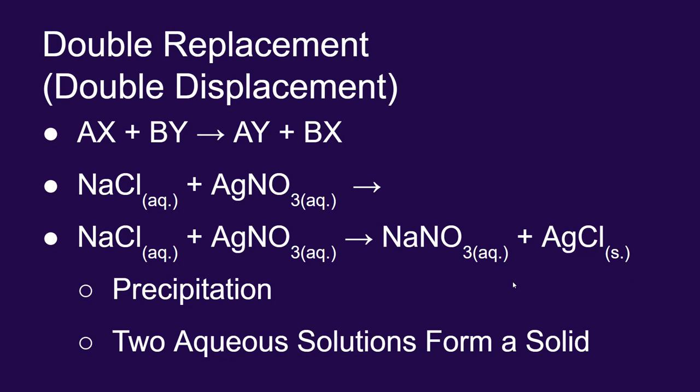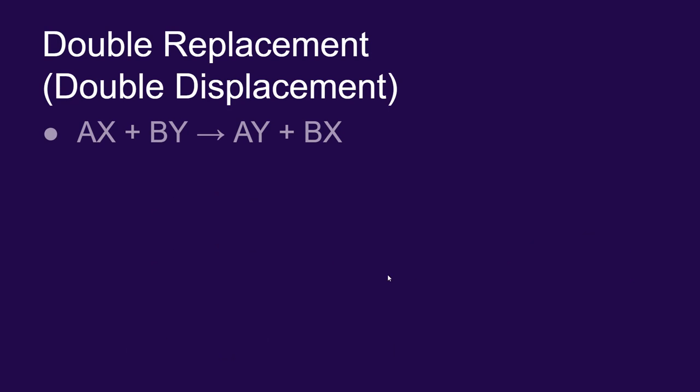Let's look at one more double replacement reaction. We're going to have the same general format where you have two couples dancing, and they're going to swap partners. This time, let's start out with some chlorous acid. Remember, chlorous acid would be the oxy acid that comes from the chlorite ion.